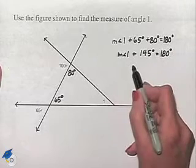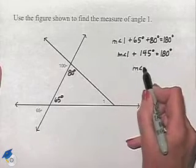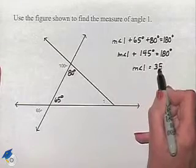Subtracting 145 degrees from both sides of the equation tells us that the measure of angle one equals 35 degrees.